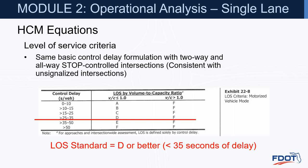Level of service criteria. We use the same basic control delay formulation as two-way and all-way stop controlled intersections, consistent with unsignalized intersections. We want to provide 35 seconds of delay or less, which gives us level of service D or better.